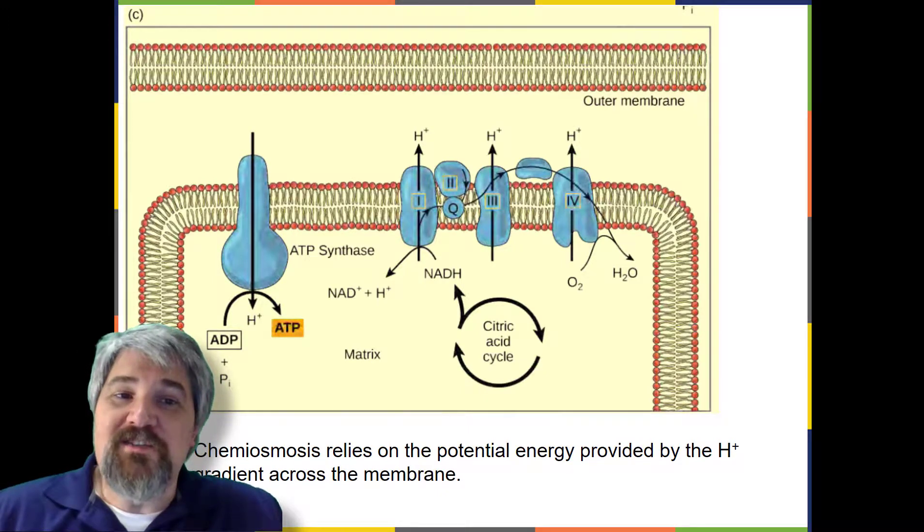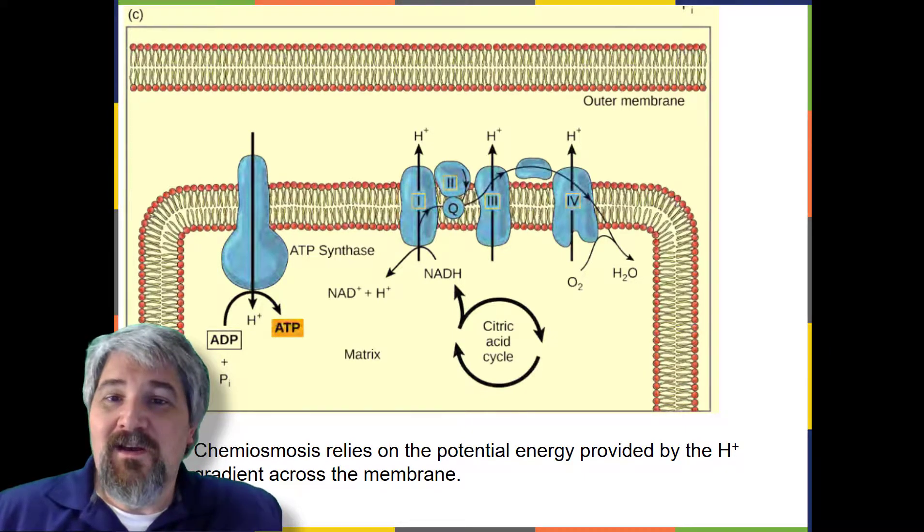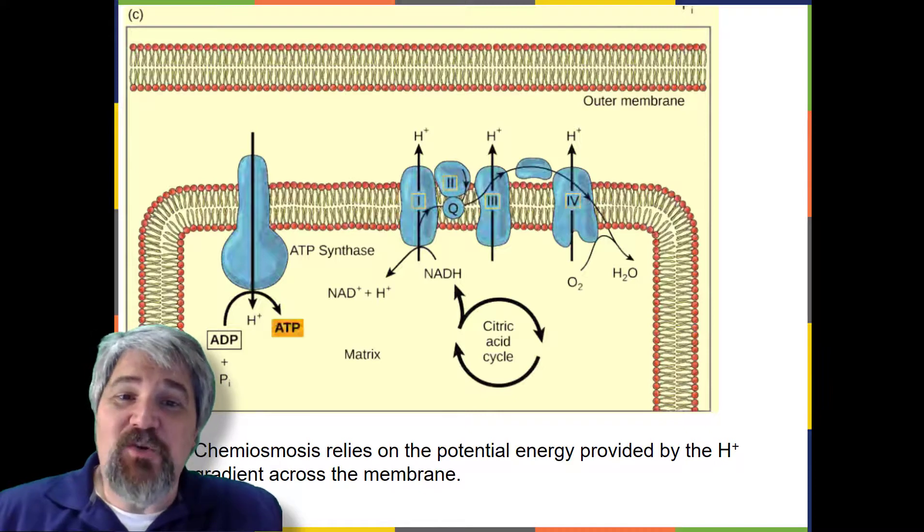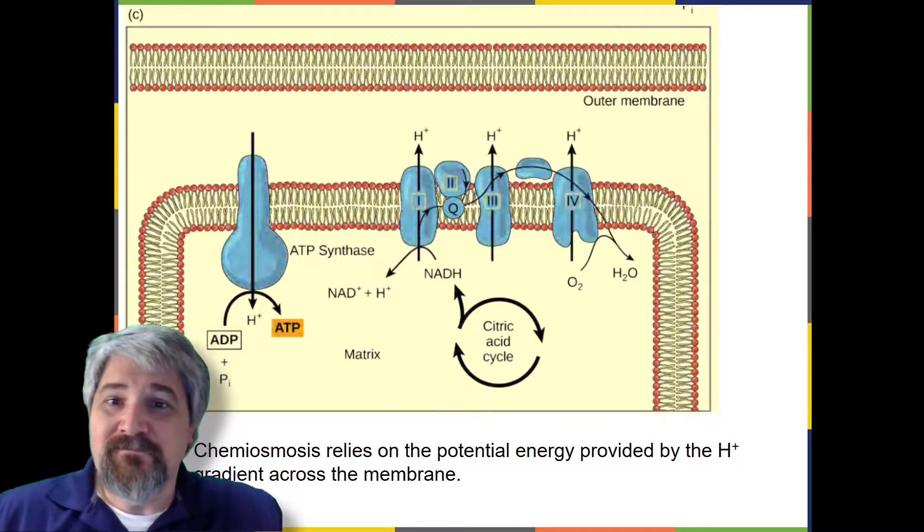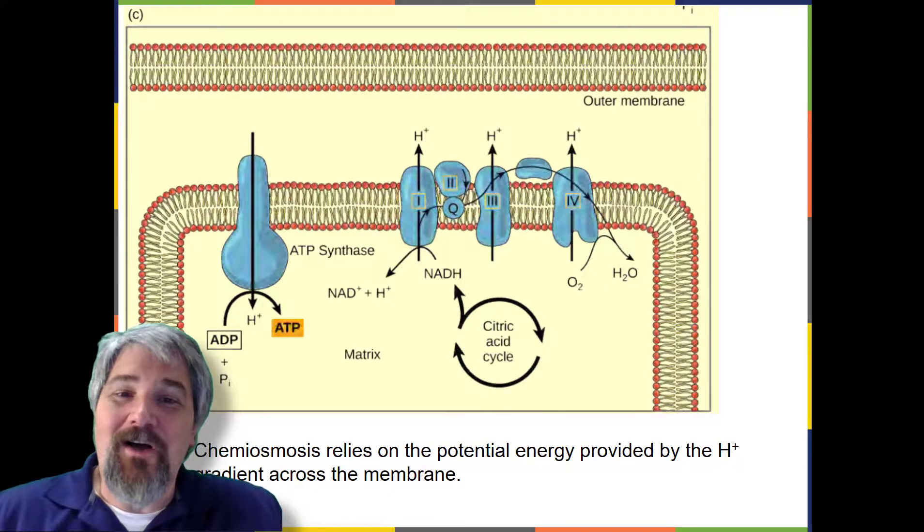If there were no oxygen present in the mitochondrion, the electrons could not be removed from the system and the entire electron transport chain would back up and stop. The mitochondria would be unable to generate new ATP in this way and the cell would ultimately die from lack of energy. This is the reason we must breathe to draw in new oxygen.